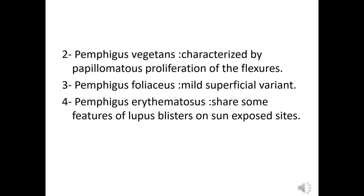The second type is pemphigus vegetans, characterized by papillomatous proliferation at the flexors of the body and extremities mainly. The third type is pemphigus foliaceus, which is very mild and the most superficial one. Finally, pemphigus erythematosus shares some features of lupus erythematosus because it affects the sun-exposed areas of the body.